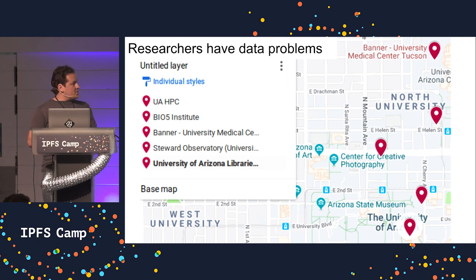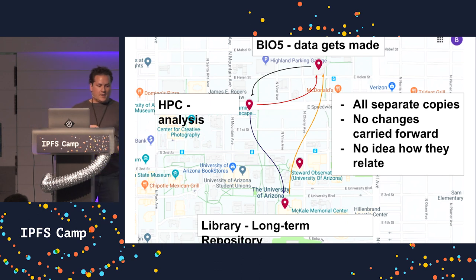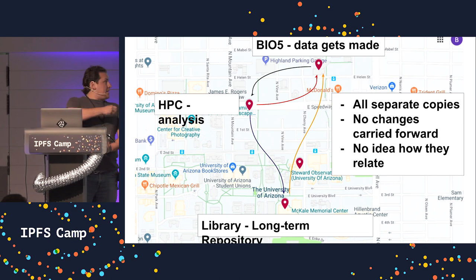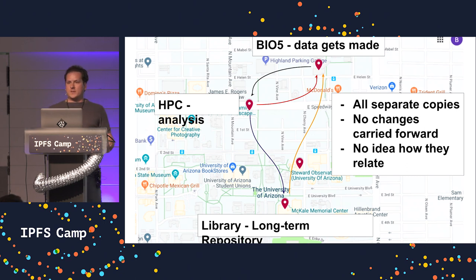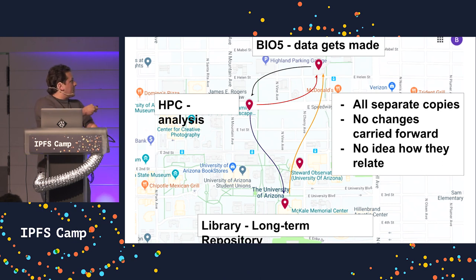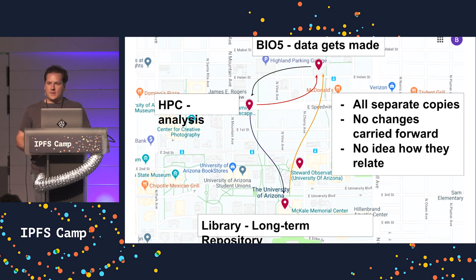Just at the University of Arizona, we have one example. The Bio5 Institute is an interdisciplinary group that produces lots and lots of data. I work at the HBC group, which is a different place — they have data there. We have a giant high-performance computer, two of them actually, buying a third as we speak. People move data from all over campus here for us to compute on it, then they often move it back. The very first problem that creates is the second you move it to some other storage system, those two data sets are out of sync.